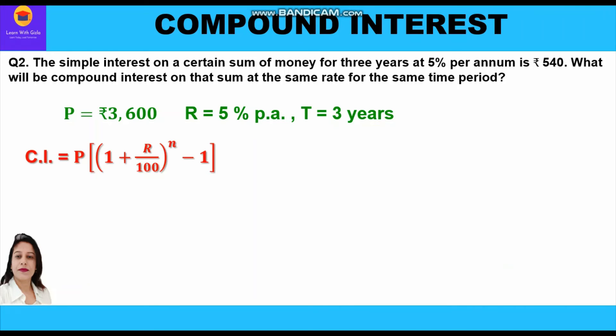Now with principal = rupees 3,600, we find compound interest using the CI formula at 5% per annum for three years: CI = 3600 × [(1 + 5/100)^3 − 1].